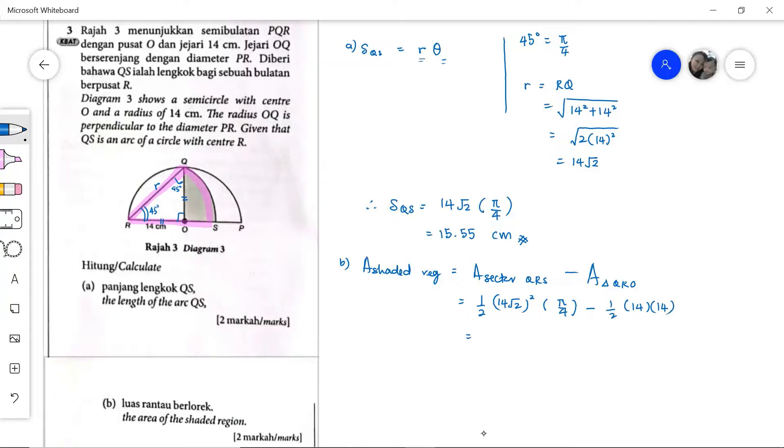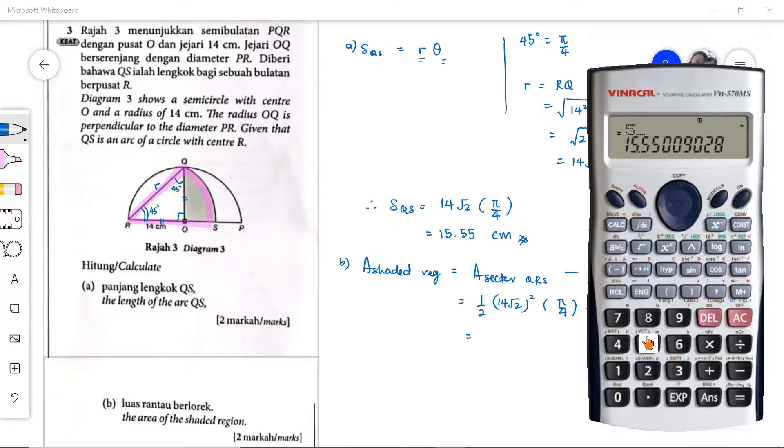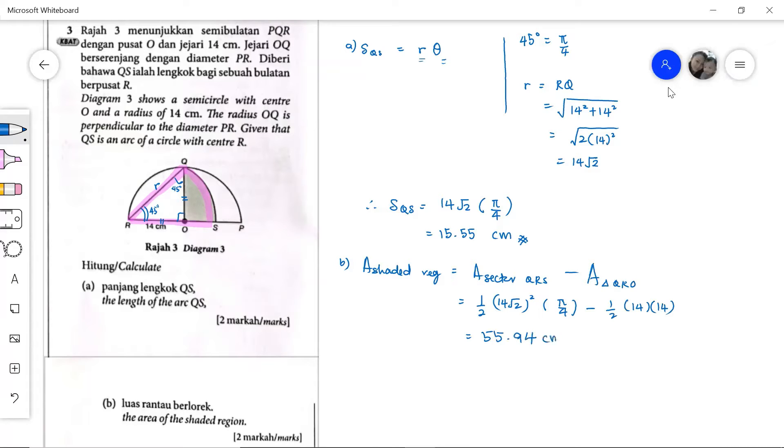Let's put this in the calculator. We have 0.5 times 14 times root 2, and then the whole thing we square it, and times with pi over 4. That is for area of QRS. And then don't forget, we have to minus half times the base, which is 14, times the height, 14. So the answer will be 55.94 cm squared.